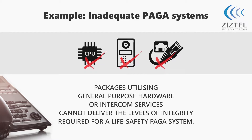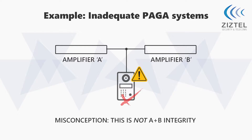An example of a poorly implemented A/B system is where one intercom or access panel has been connected to a primary and secondary amplifier.